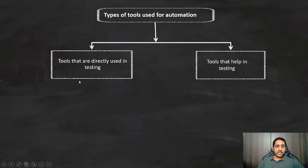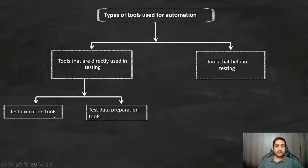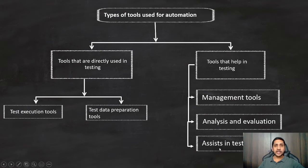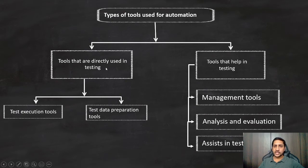For tools directly used in testing, we have two types: test execution tools and test data preparation tools. For tools that help in testing, we have three types: test management tools, test analysis and evaluation tools, and tools that assist in testing. So we have two types — tools directly used in testing, and tools that provide support for the testing activity.